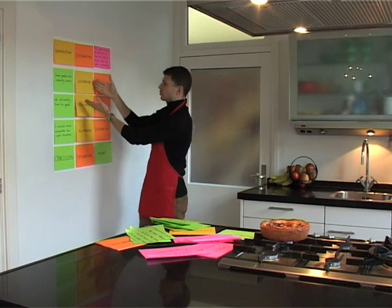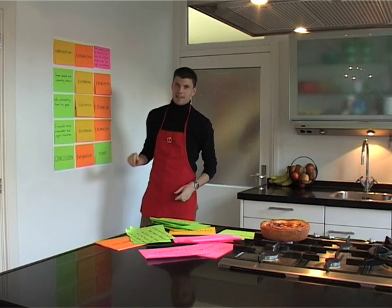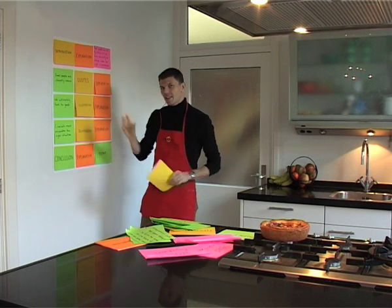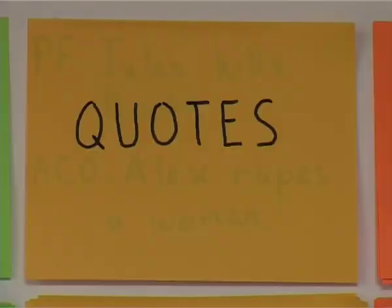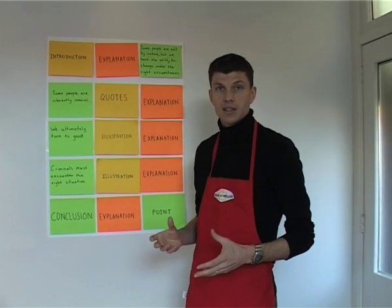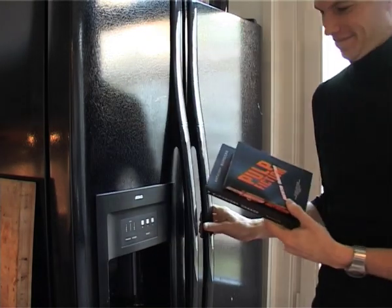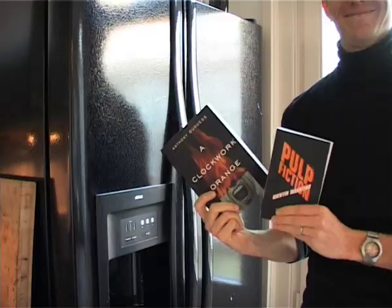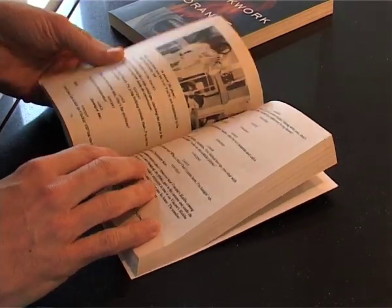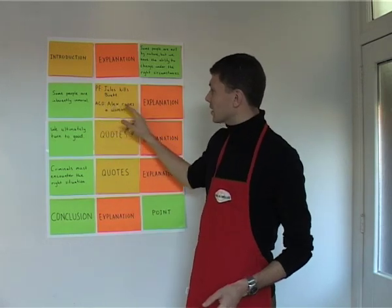Now it's time to look for illustrations that support these arguments. Illustrations in the body paragraph consist mainly of quotes — these are the driving force behind the essay. So what we'll need now is to go quote hunting, finding sentences and lines from the books that support the main arguments. What kind of quotes could I find from Pulp Fiction and A Clockwork Orange to support the statement that some people are inherently immoral or evil? In Pulp Fiction I can refer to the fact that Jules kills Brett. In A Clockwork Orange I can refer to how Alex raped a woman.